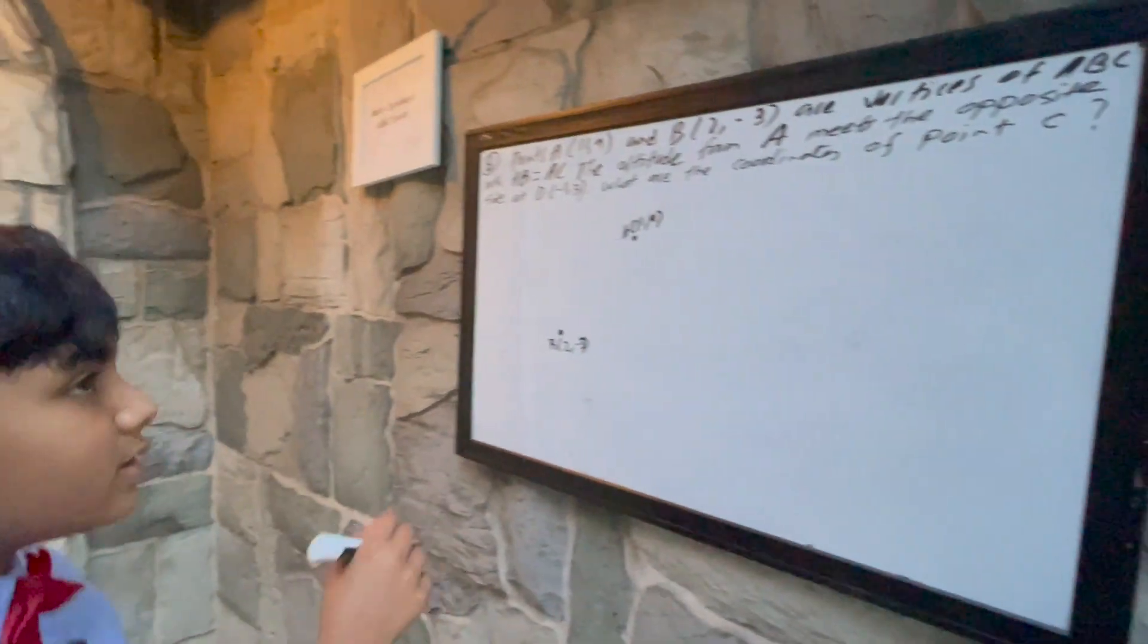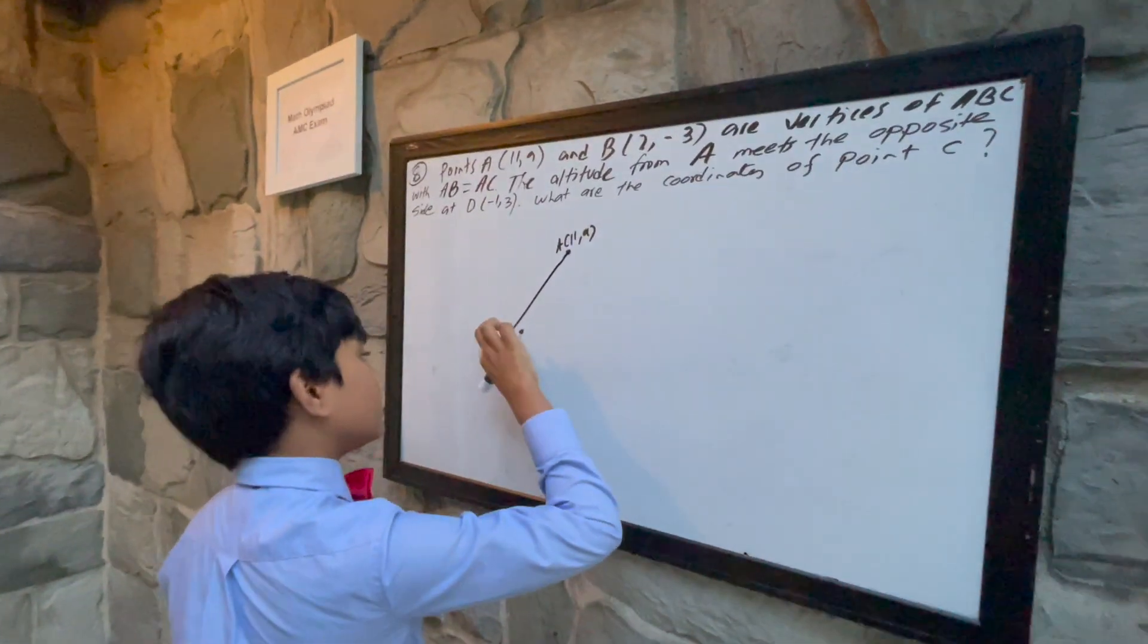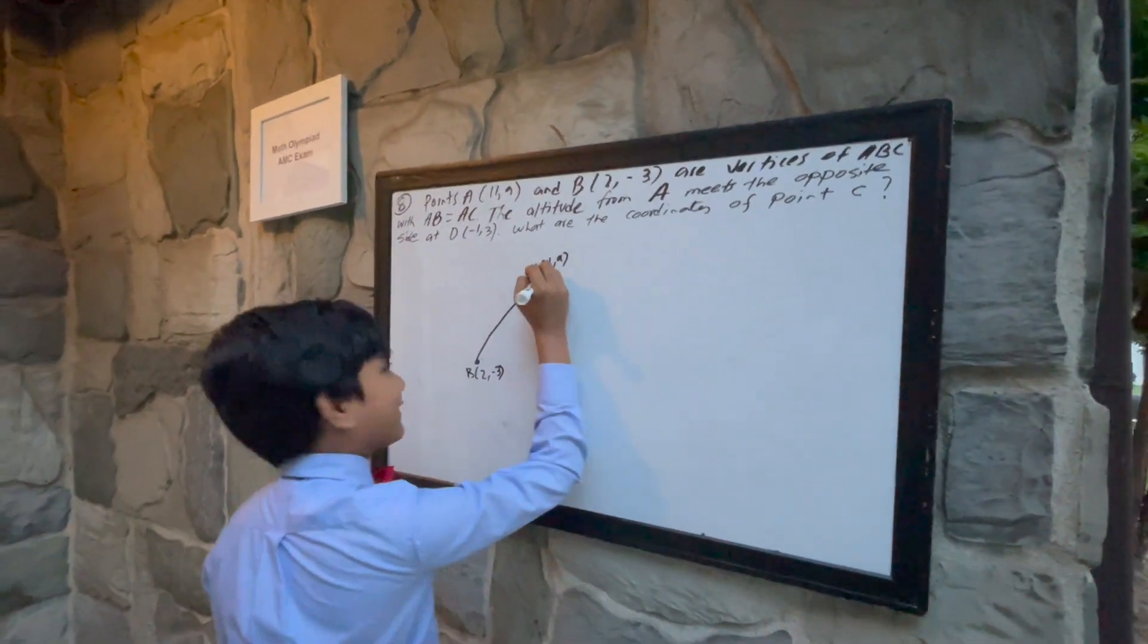And there are vertices of ABC, with AB equals AC, meaning that we've got an isosceles triangle on our hands.